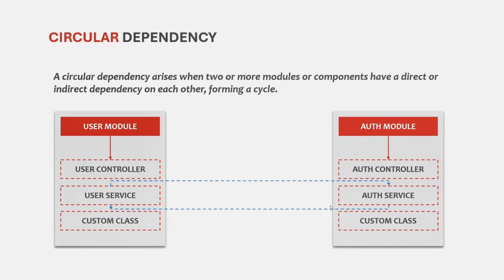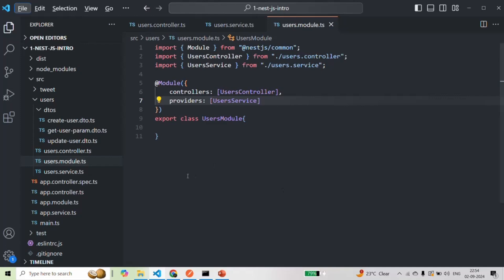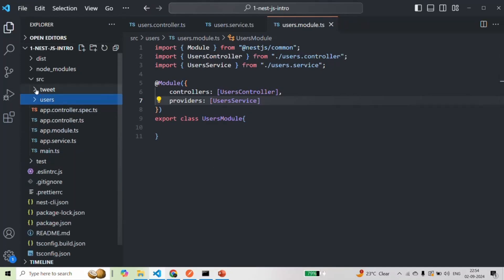So I hope the three types of dependencies are clear to you. We have already talked about intramodular dependency, but we are going to talk about intermodular dependency and circular dependency in our coming lectures. In order to understand those, we need to create some more modules in our application. So let's go to VS Code, where along with this user module we have also created this tweet module.